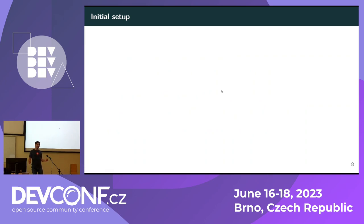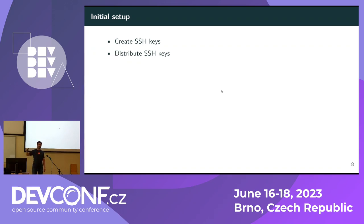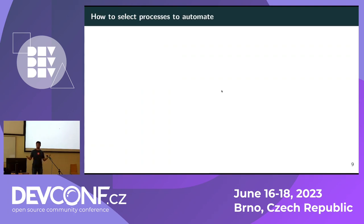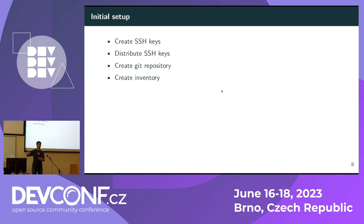The initial setup is simple. First, create SSH keys if you don't already have them — you might want to create one specific for Ansible. Then distribute those SSH keys. Create a Git repository where you will put your Ansible code — yes, you can do it without Git, but you really don't want to. Create your first inventory where you list all your machines, and you're done — ready to write playbooks.